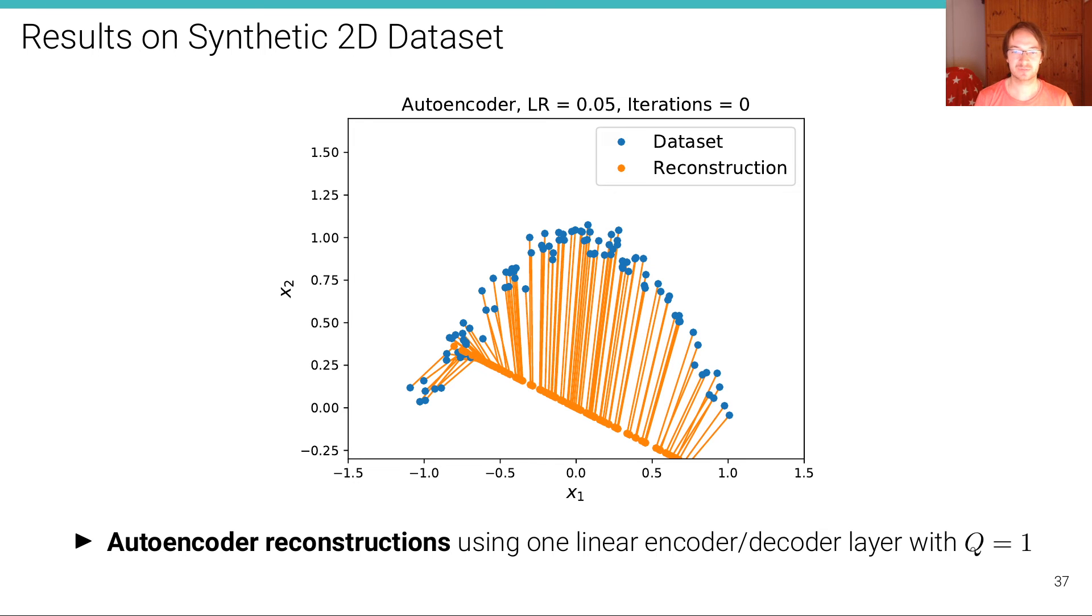I've actually implemented these three types of models using the educational framework. And this is the visualization that I have obtained. What you can see here are the results of an autoencoder on a 2D toy data set in blue. This is a cosine from zero to pi. And we observe the data sets in blue and the reconstructions as the yellow points, as well as the reconstruction errors indicated by these yellow lines that connect the blue and the corresponding orange point.